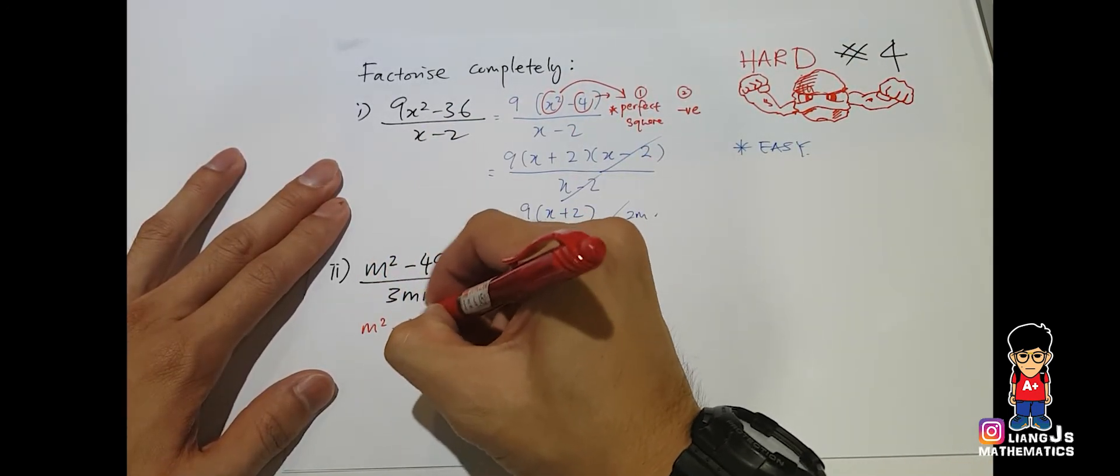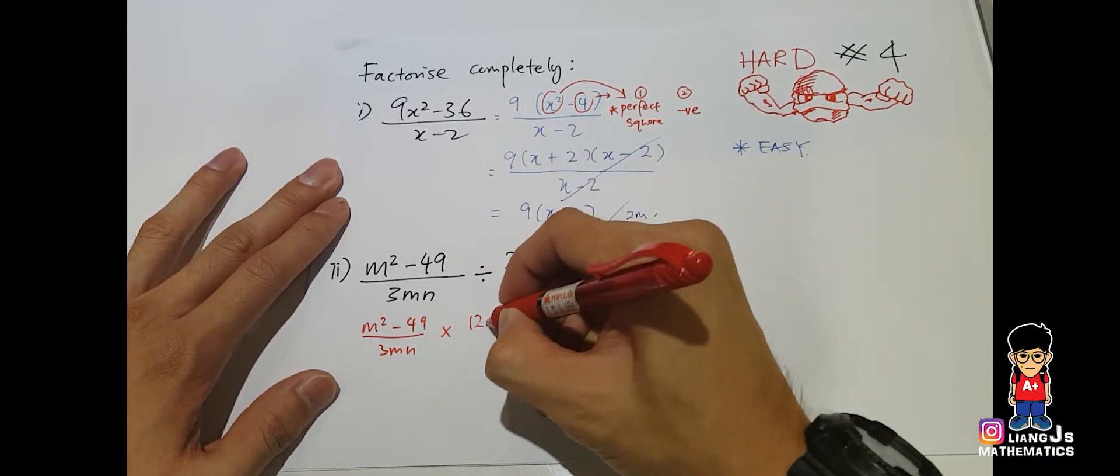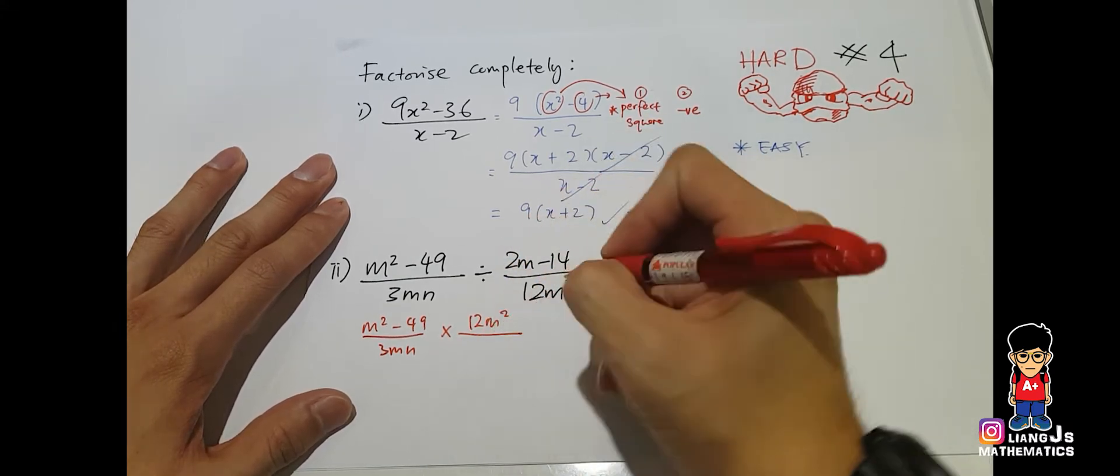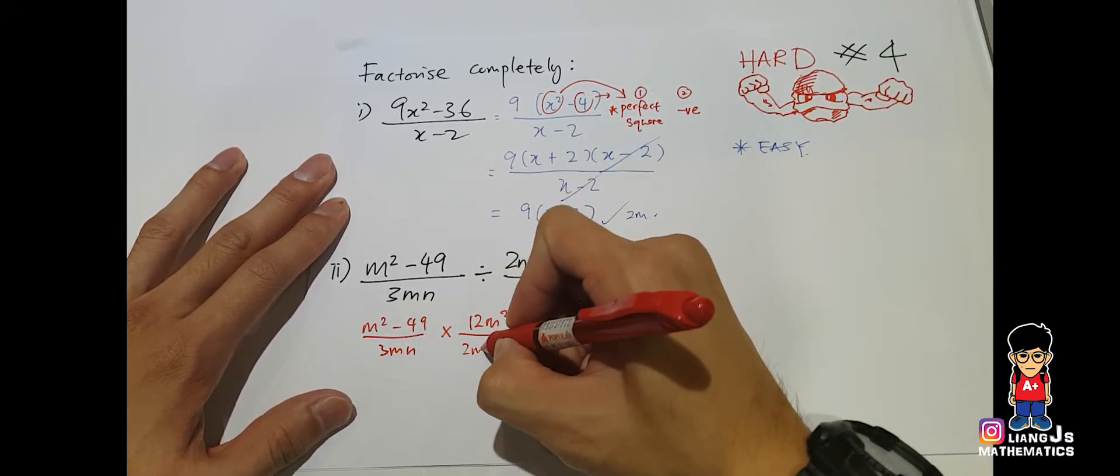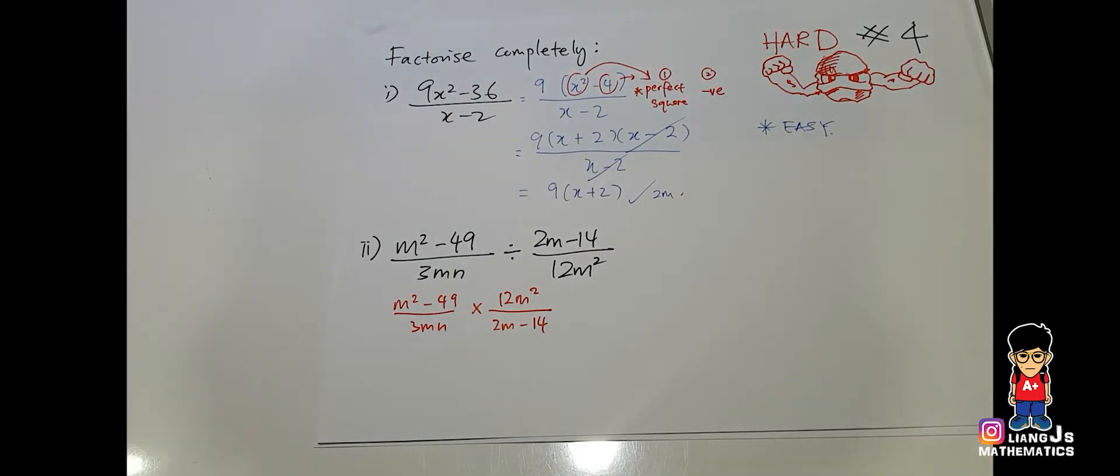So, I will just write this one first. And I will straight away take the divide change to times, where I think standard 4, standard 3, you already learned that. Okay, 2n minus 14. And this is what you get after you switch the position of your fraction behind.